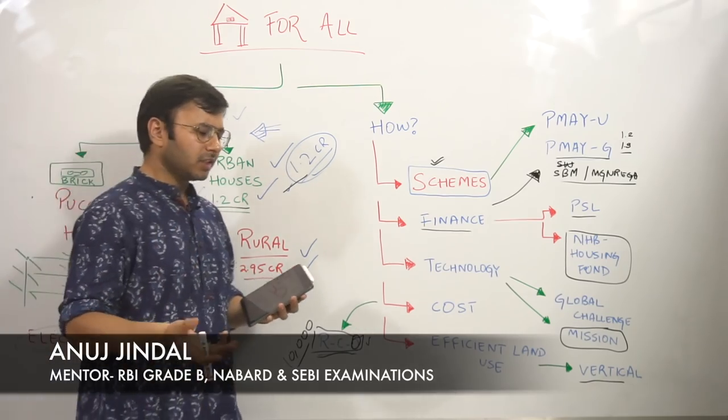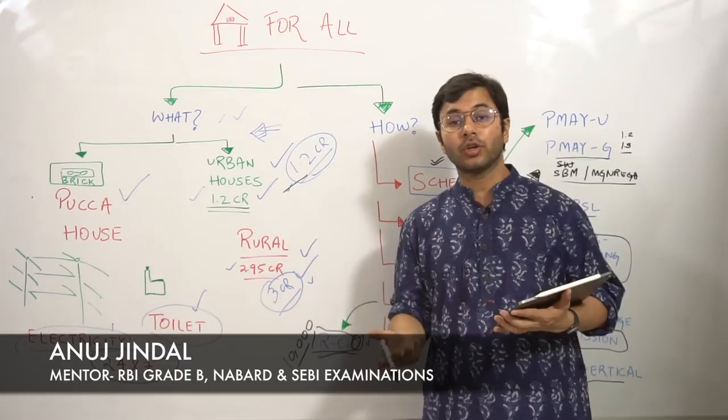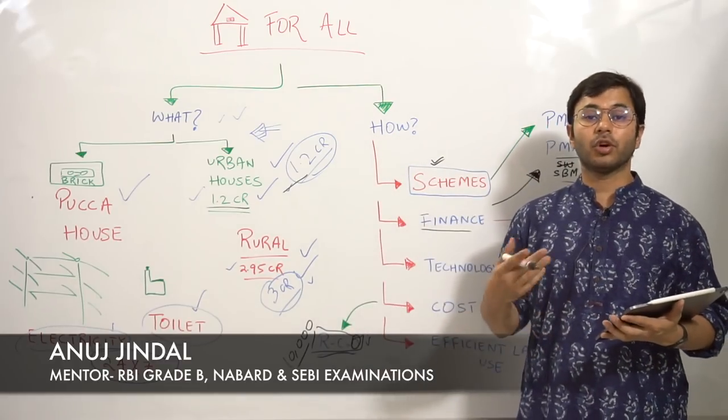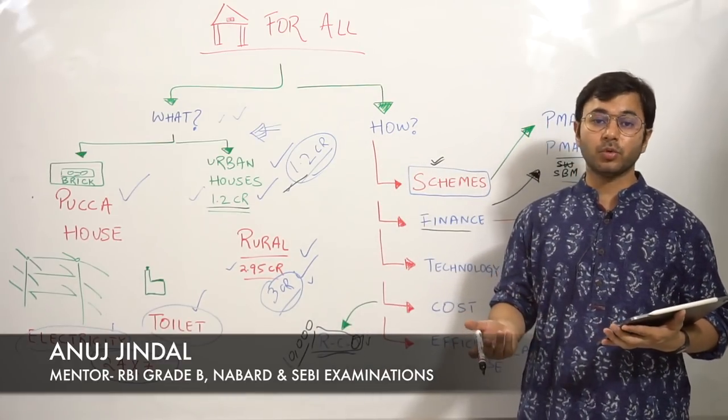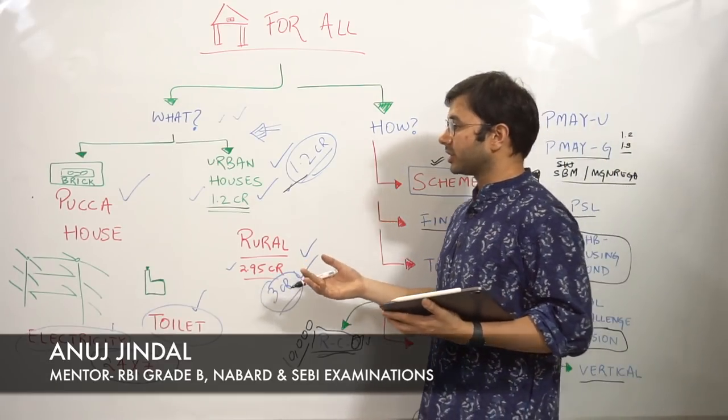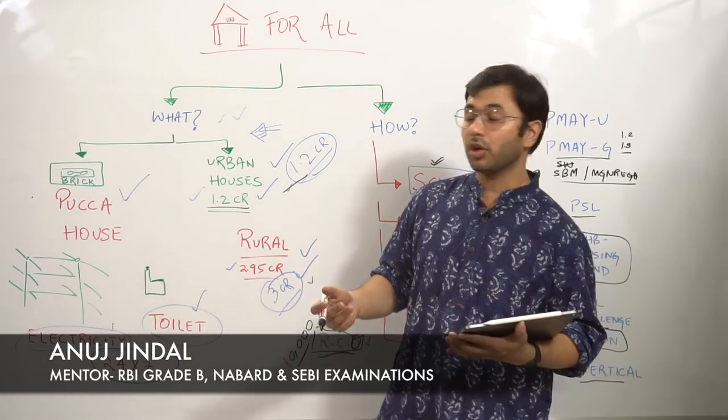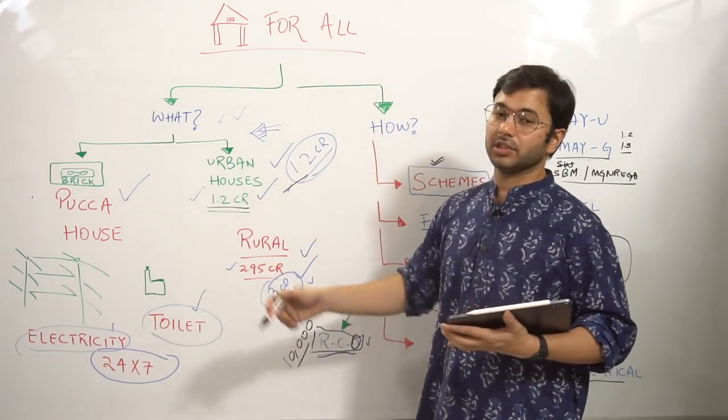So if a question comes, whether it's objective or subjective, which asks about what should be done in order to ensure that housing for all is implemented by 2022, then the how part needs to be mentioned. Or if the question comes, what exactly is the meaning of national housing, sorry, what is the meaning of housing for all? Then this needs to be mentioned.